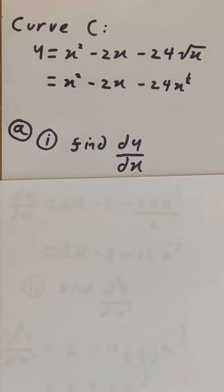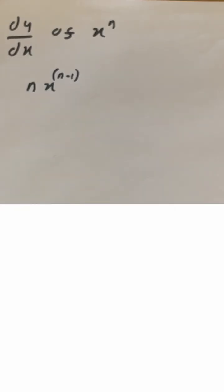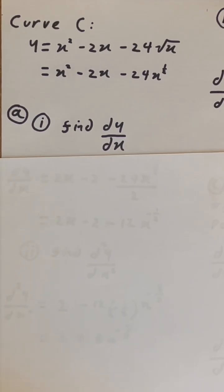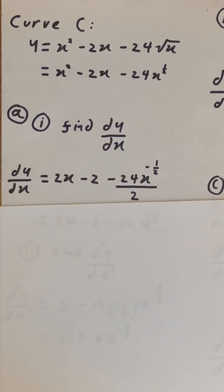Part A is asking us to find the first derivative. Let's go over the rules of differentiation. We take the x term, bring the power to the front, and minus the power by 1. Using those rules, we can simply differentiate our equation as shown.